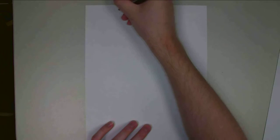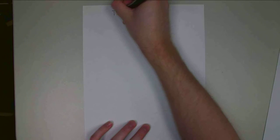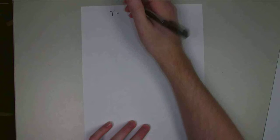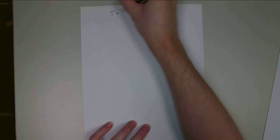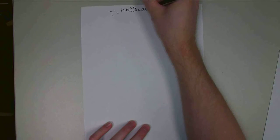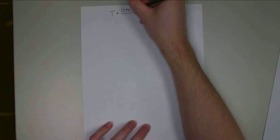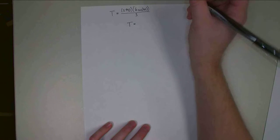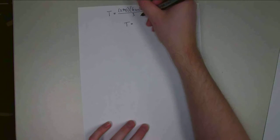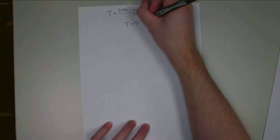The tension force, if I rearrange the equation, T is going to be equal to 2,943 times 6 cosine 45 all over 3. If I solve that, plug in the numbers, I get the tension force is equal to 4,162 Newtons.